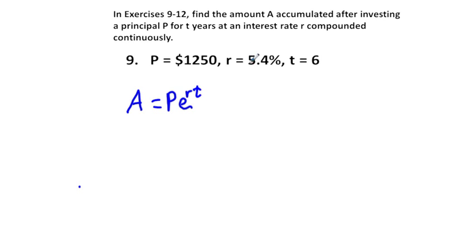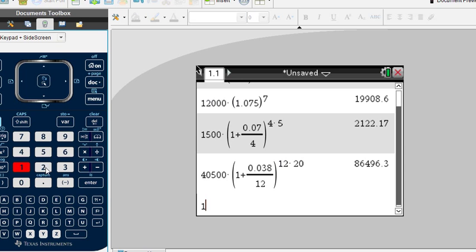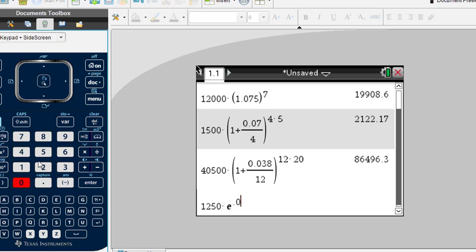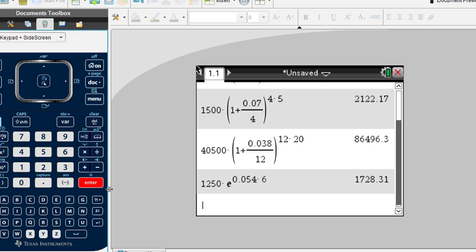Again, the rate is going to be, in this case, 0.054, and T is going to be 6 years. In this case, our amount is our principal, which is $1,250, times E to the power of Rt. And R is 0.054 times 6 for T. Let's put this in our calculator: 1,250 times E to the 0.054, and we're doing this over 6 years. This would be our amount, $1,728.31.